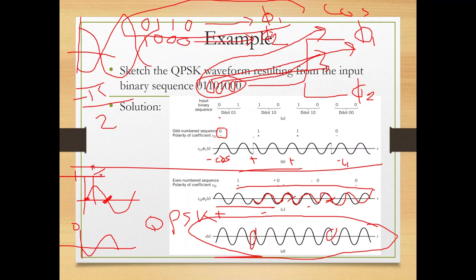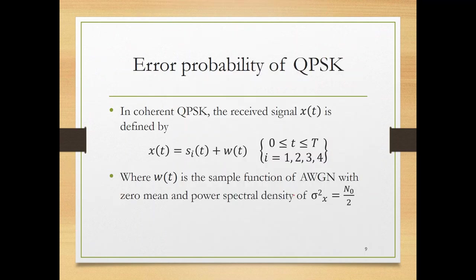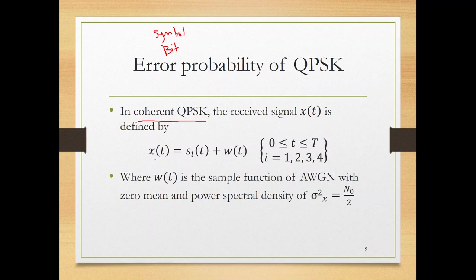For any modulation scheme we study the bit error rate. Before studying QPSK error probability, we must distinguish between symbol error and bit error — a symbol is a collection of bits, while a bit has a single duration and energy level.